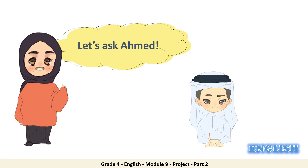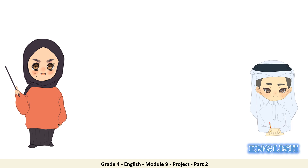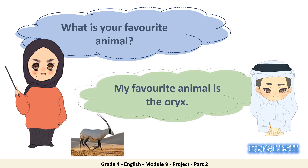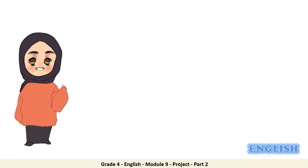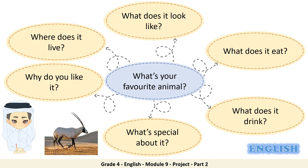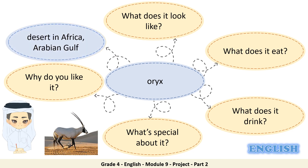Now it's time to ask Ahmed a question. Read the question with me: What is your favorite animal? Listen to Ahmed: my favorite animal is the oryx, and we all know that the oryx is the national animal of Qatar. It's time to help Ahmed write about his favorite animal. Listen to the information about the oryx. Question number one: where does it live? It lives in the desert in Africa and the Arabian Gulf.